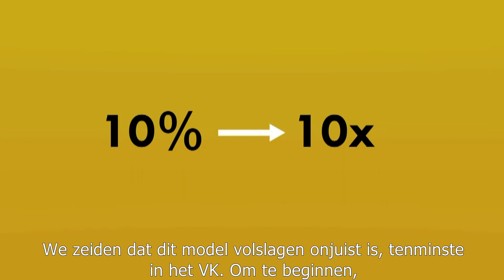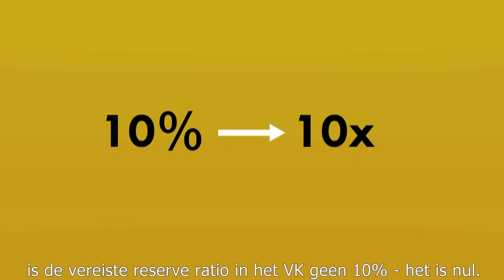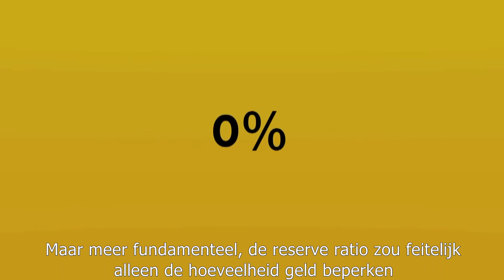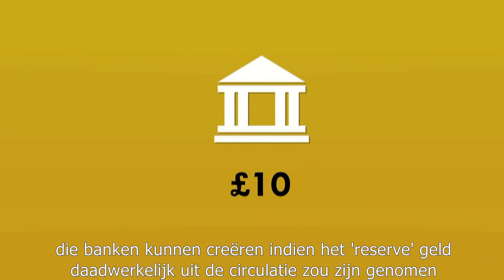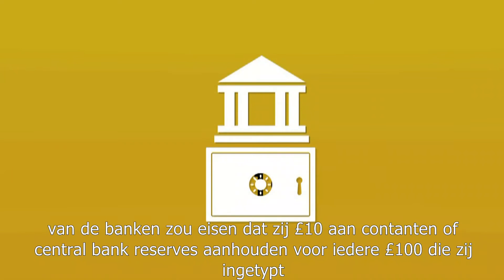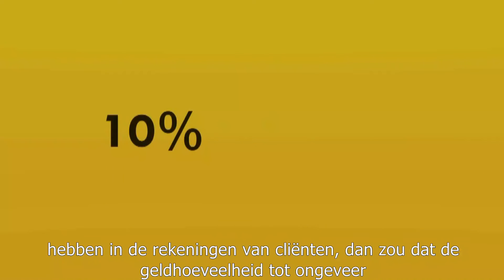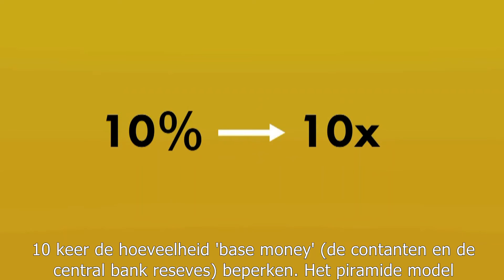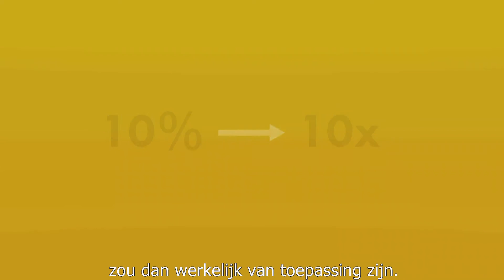We said that this model of banking is completely inaccurate, at least in the UK. For a start, the required reserve ratio in the UK isn't 10% — it's zero. But more fundamentally, the reserve ratio would only actually limit the amount of money that banks can create if the reserve money were actually taken out of circulation and put into a safe deposit box or an electronic equivalent. If the Bank of England actually required banks to hold £10 of cash or central bank reserves for every £100 that they typed into their customers' bank accounts, then that would limit the money supply to around 10 times the amount of base money — the cash and central bank reserves. The pyramid model would then actually apply. But this is almost never what happens.